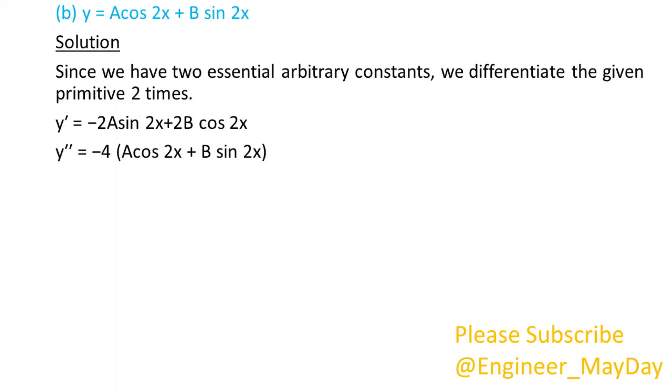Since we have two essential arbitrary constants, we differentiate the given primitive two times. y double prime equals negative 4y.